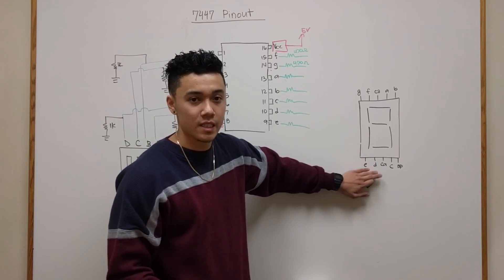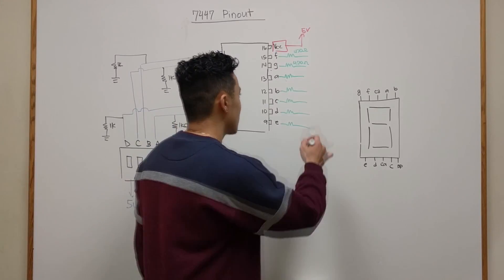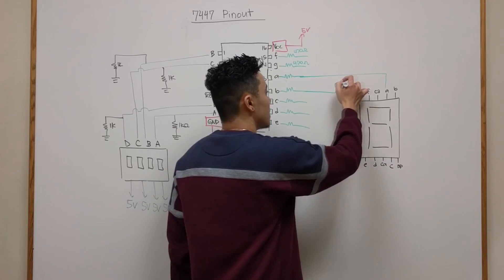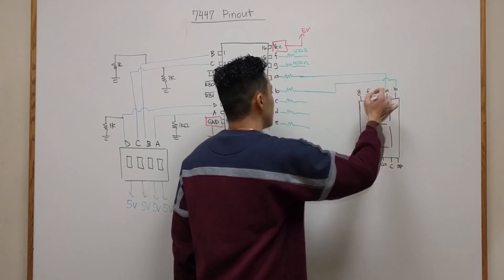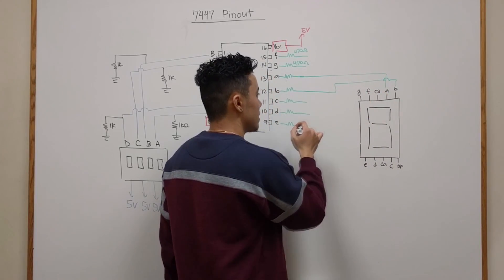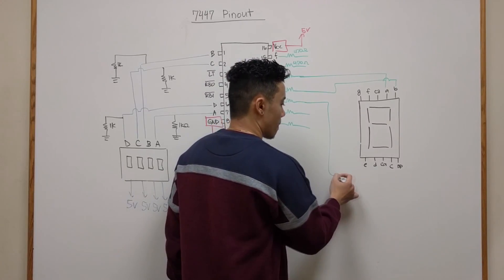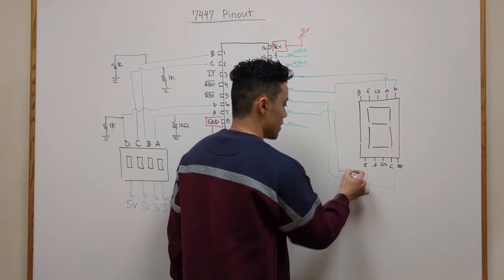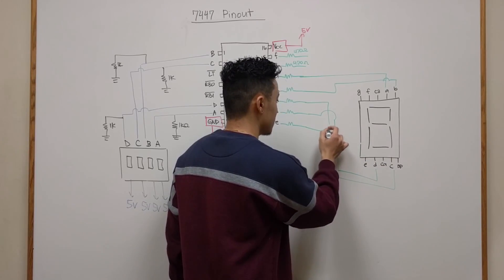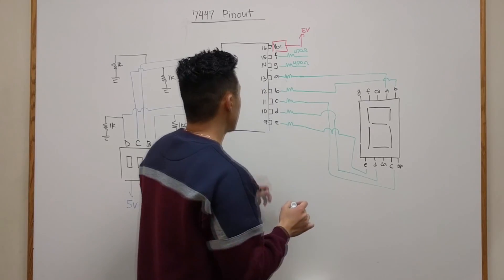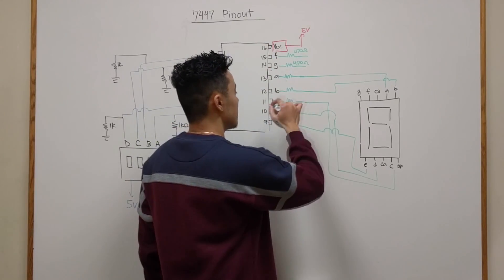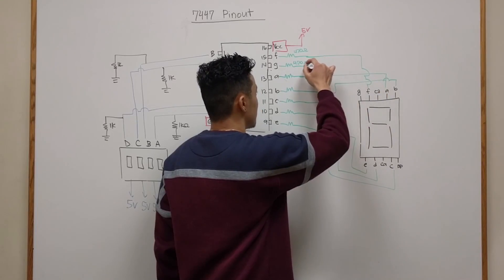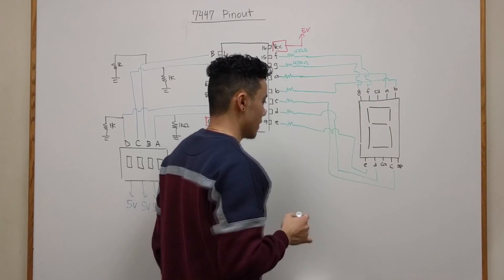All of these are going to be 470 ohm resistors and we're just going to connect them to the corresponding pins on the 7 segment display. So we'll connect pin A to A, pin B to B, pin C to C, connect pin D to D. We still have pins F and G up here. Pin F will connect here and pin G will connect there.